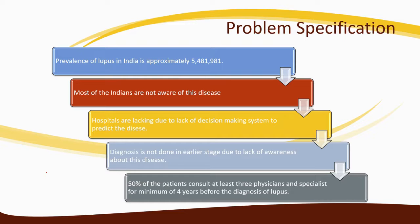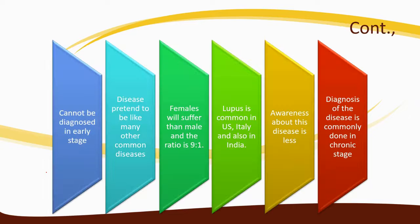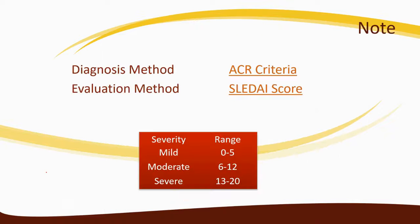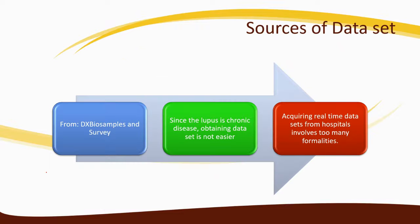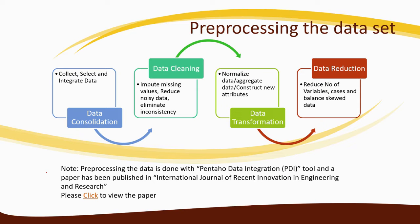If your problem is very new to everyone, you have to explain what it is. Then you have to show the problem specification — what is the problem currently going on in that specific problem domain. After that, write about research motivation: what is your main motivation for doing this research, what questions can be answered through your research, and from where you obtained the dataset.